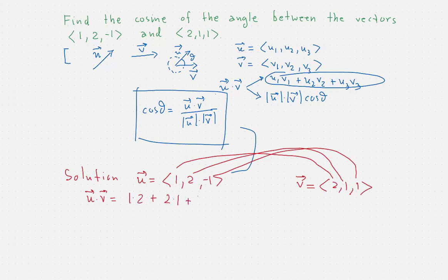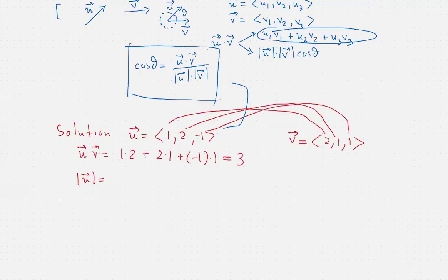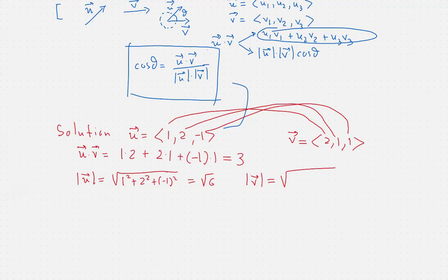Now for the magnitudes: the magnitude of the first vector is the square root of 1² + 2² + (-1)², which is the square root of 6. The magnitude of the second vector is the square root of 2² + 1² + 1², also the square root of 6. Applying the formula, the cosine equals 3 divided by (√6 × √6), which is 3 over 6, which is one half.